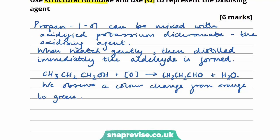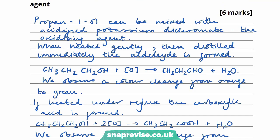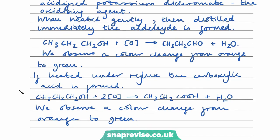Now I can explain the second situation — the oxidation of our primary alcohol to form the carboxylic acid. I've explained that if heated under reflux the carboxylic acid is formed, and I've given an equation for that. Again, we have our propan-1-ol being oxidized to form our carboxylic acid — in this case propanoic acid — and a molecule of water. And we observe a color change from orange to green.